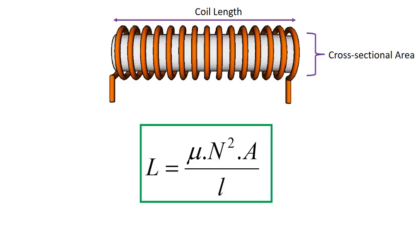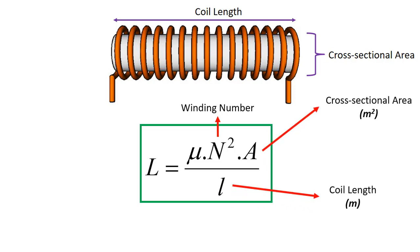The inductance value of the coil is found with this formula. Here, N is the winding number, A is the cross-sectional area, l is the coil length, and μ is magnetic permeability. The unit of the coil is also Henry.